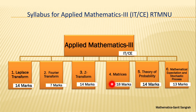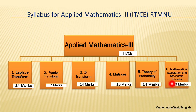Matrices is also the easiest unit among the six. After that, Theory of Probability has 14 marks, and Mathematical Expectation and Stochastic Process has 13 marks. Both of these units are on probability. If we add them together, that is 13 plus 14 equals 27 — so 27 marks of probability are asked inside Applied Mathematics 3.